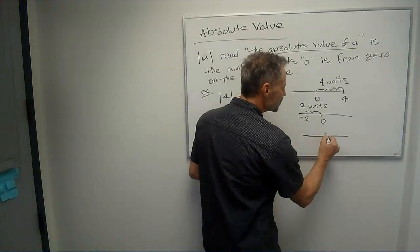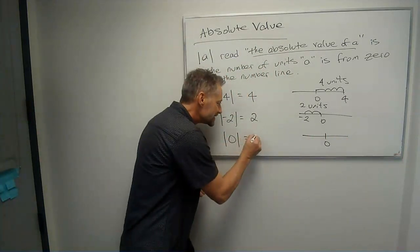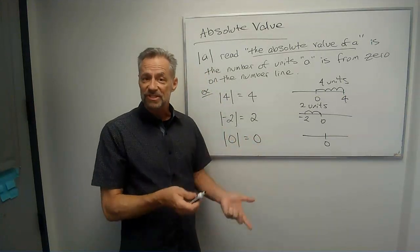And then zero, obviously, if we go to zero, we don't go anywhere. The number zero is zero units from zero, so the absolute value of zero is just zero.